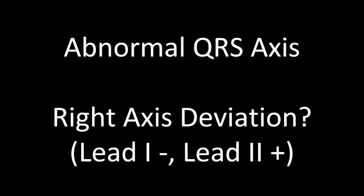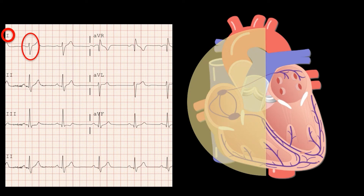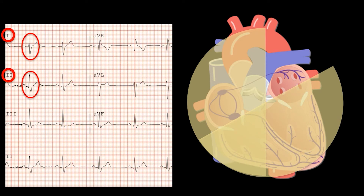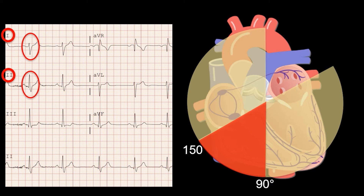The QRS axis can also shift towards the right. In this case, lead 1 will be negative and lead 2 will be positive. When lead 1 is negative, the electrical vector is moving towards the right side of the body, and when lead 2 is positive, the overlap is somewhere between plus 90 and plus 150 degrees, which means the axis has shifted slightly to the right. On ECG you'll see a negative deflection in lead 1 and a positive deflection in lead 2.